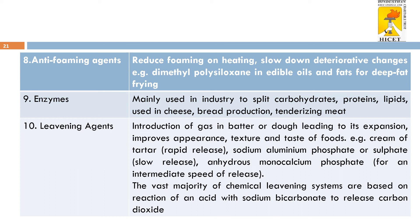Enzymes: many food products are harder in structure due to the presence of complex carbohydrates, proteins, and lipids. In order to break down these complex compounds into simpler compounds, enzymes are used in food products such as cheese, bread production, and meat tenderization. Leavening agents: introduction of gas in batter or dough leading to its expansion improves the appearance, texture, and taste of foods. Leavening agents such as anhydrous monocalcium phosphate, sodium aluminium phosphate, or sodium aluminium sulfate are used in bread, where leavening is important for flavor and texture. These agents slowly help in releasing carbon dioxide during baking.